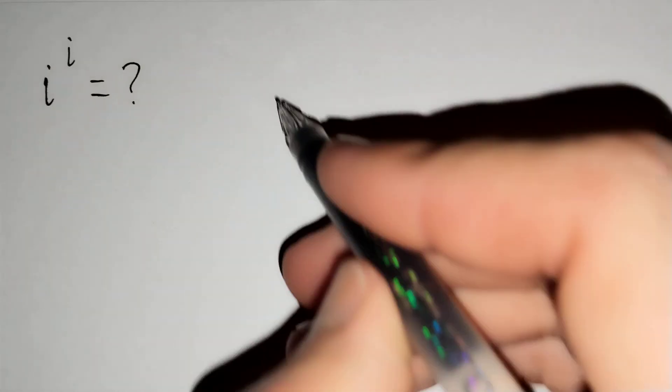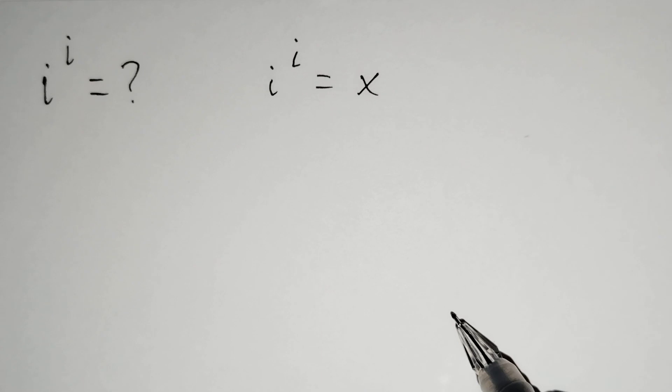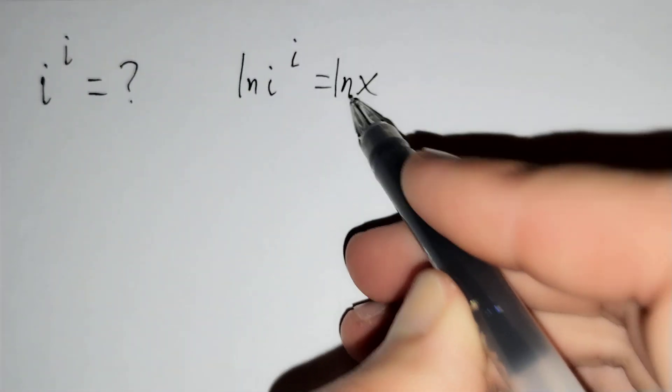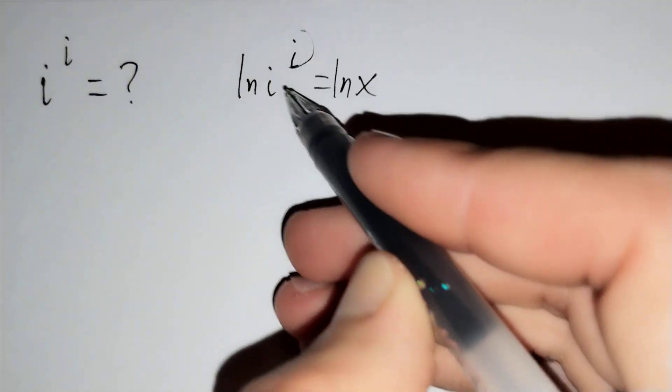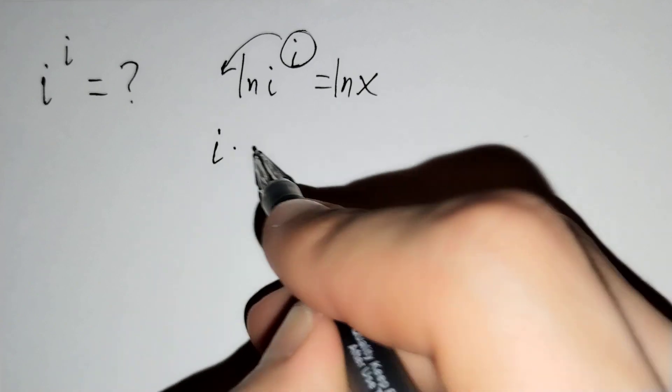If we think that i power i equals x and if we apply ln to both sides, ln of i power i equals ln x. The i power comes down as a coefficient: i times ln i equals ln x.